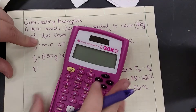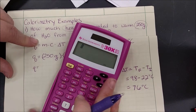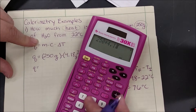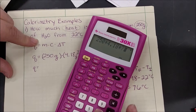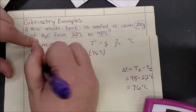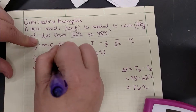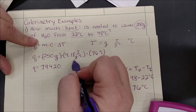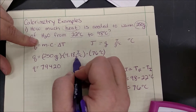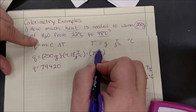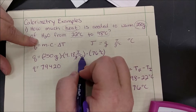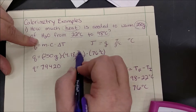We simply multiply our numbers: 250 times 4.18 times 76, and we get 79,420. Looking at our units, grams cancel because we have grams divided by grams, and Celsius cancels because we have 1 over Celsius multiplied by Celsius, so we are left with joules.